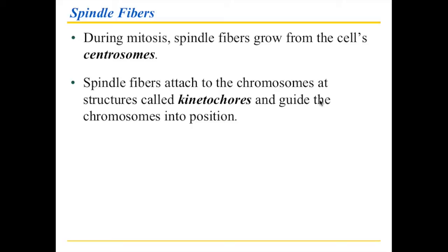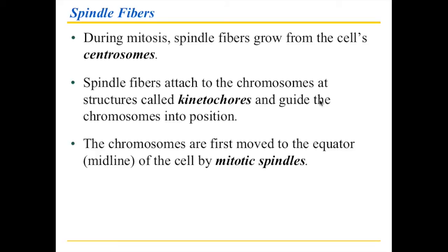The spindle fibers guide the chromosomes through the rest of the process — a bit like rustling cattle. You throw a lasso around the neck of a cow and pull it toward you. The spindle fibers are targeted to chromosomes, attach themselves, and then the chromosomes are moved to the center of the cell — called the equator or midline. These spindle fibers form what is called a mitotic spindle, which is one of the key features of mitosis.